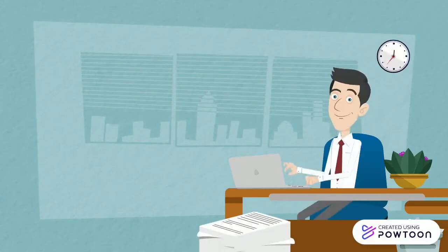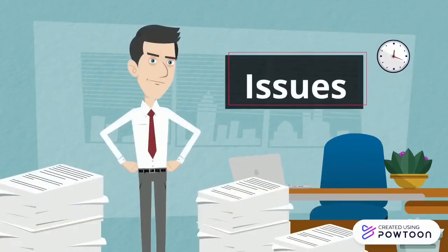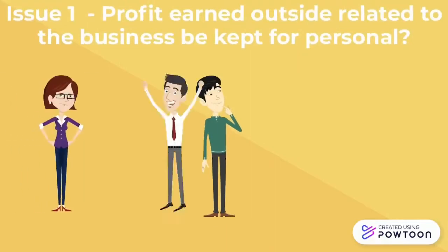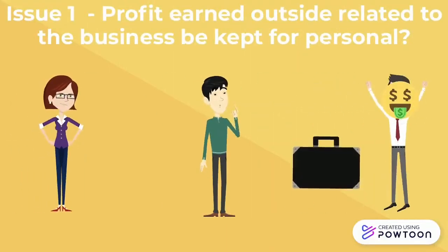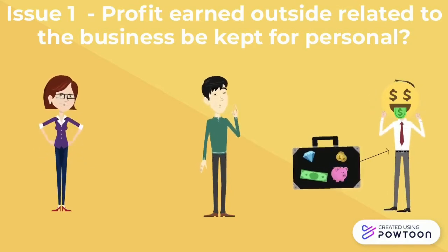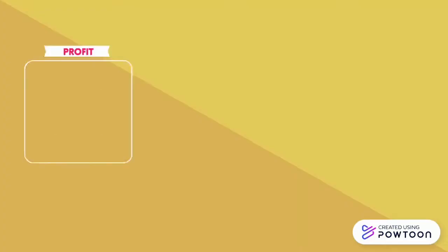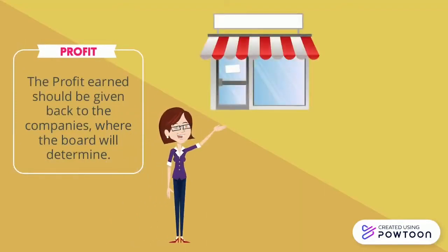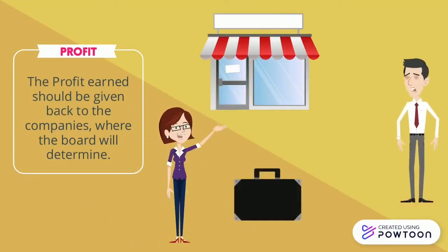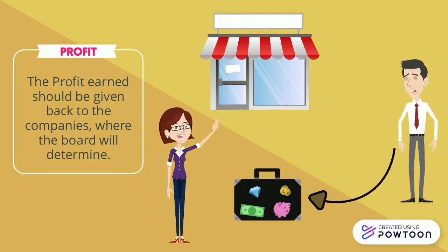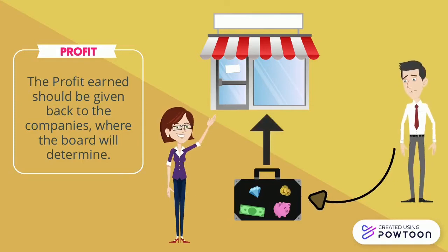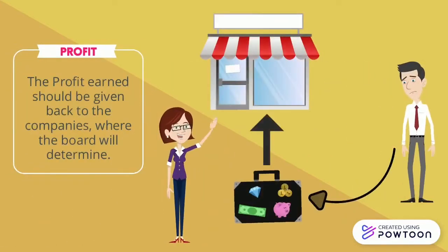The first issue is: can profit earned outside but related to the business be kept for personal use? This issue can be seen in the diversion of profits, where Luna alleges that George had been engaging in improper practice and receiving secret profits when buying and selling carpets from his friend. It is believed that all profits should be distributed as directors' remuneration, and the profit earned should be given back to the company.